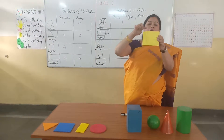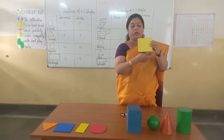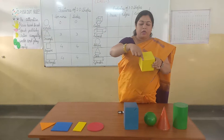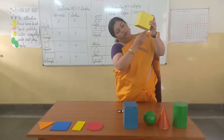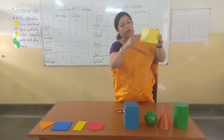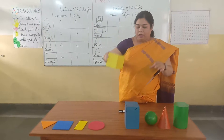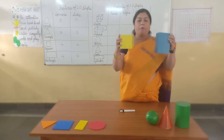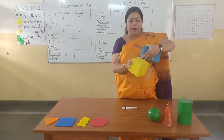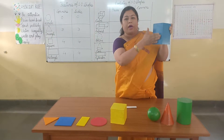Cube has 12 edges. These basic features are the same in cube and cuboid. The only difference is cube is made up of squares and cuboid is made up of rectangles.